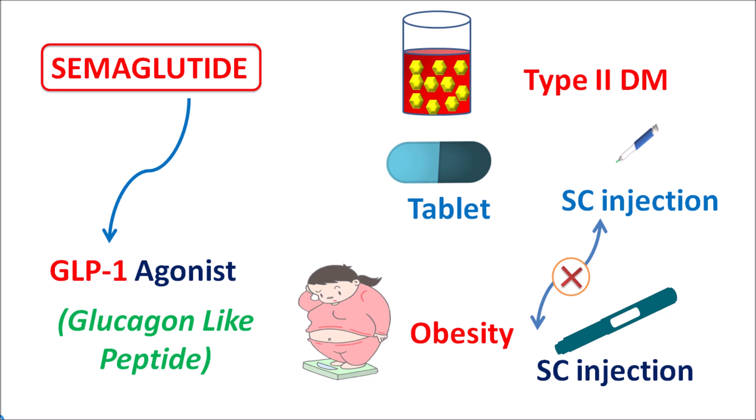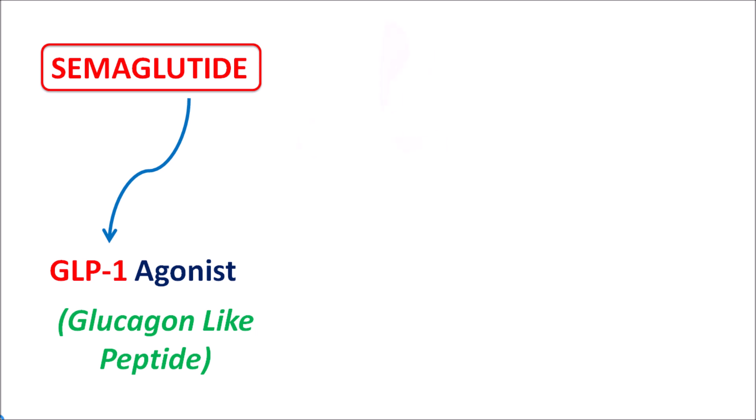Among GLP-1 agonists, semaglutide is uniquely available as an oral formulation to control diabetes mellitus. It also shows beneficial effects in the management of obesity by reducing appetite, resulting in decreased body weight. However, this drug is not indicated in children — it is only available for the treatment of obesity in adults.